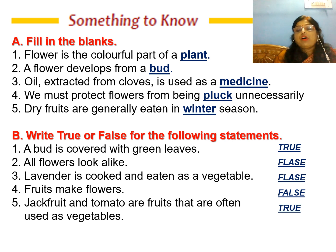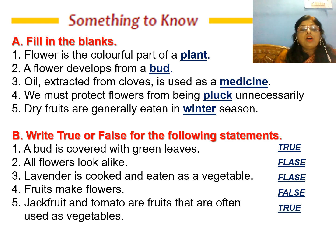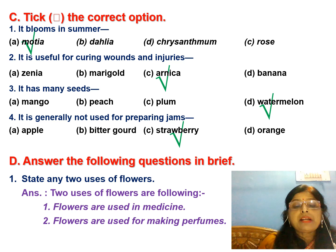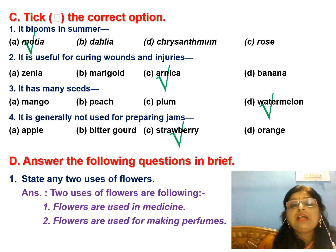Write true or false for the following statements. For the tick-the-correct-option questions, many answers are given for one question but only one is correct and you have to choose that correct option. The question is: which flower blooms in summer? Options are Motia, Dahlia, Chrysanthemum, and Rose. The correct answer is Motia.